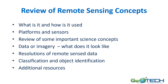I want to stress that this is a review of remote sensing concepts and is not intended to go into depth — we'll show you some more resources if you need more information. We're going to talk about what it is and how it's used, platforms versus sensors, and review a few of the more important science concepts. We'll also look at data and imagery, different resolutions, and briefly cover classification and object identification using remote sensing. Additional resources are included at the end of this module.